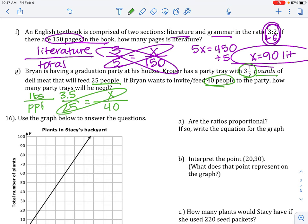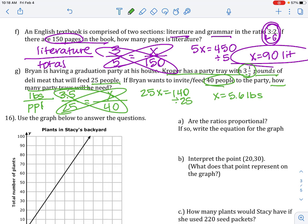Now, let's cross multiply. 25x equals 3.5 times 40 is 140. Last step, divide to get 5.6 pounds. How many party trays will he need, though? There's 5.6 pounds needed, but how many pounds are on each tray? Kroger has a party tray with 3.5 pounds. So, what you would do is just take that 5.6, divide by how much is on each tray to get 1.6.